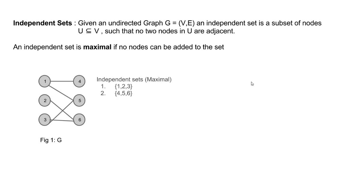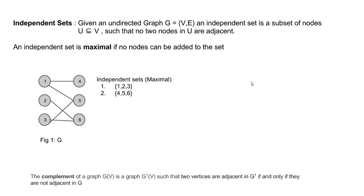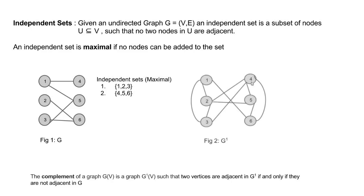Now let's go to the definition of a complement of a graph. A complement of a graph G=(V,E) is a graph G'=(V,E') such that no two vertices are adjacent in G' if and only if they are not adjacent in G. So for figure 1, the complement is shown in figure 2.